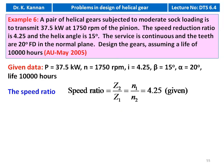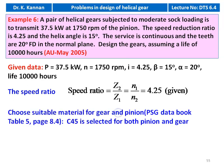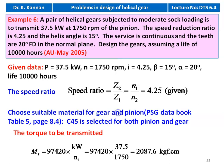Given data: power = 37.5 kW, speed = 1750 rpm, speed reduction ratio = 4.25, helix angle = 15 degrees, pressure angle = 20 degrees, life = 10,000 hours. Speed ratio i = 4.25. We select C45 as the material for both pinion and gear. Torque MT = 97,420 × 37.5 / 1750 = 2087.6 kgf·cm.